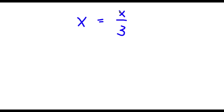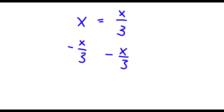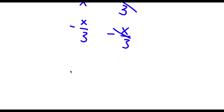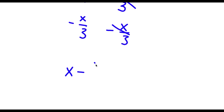Alright, so I have x is equal to x over 3. Now the first thing I'm going to do is subtract x over 3 on both sides. So now these two are going to cancel out and now I'm going to be left with x minus x over 3 is equal to 0.